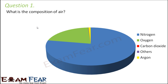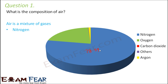Question number one: what is the composition of air? Air is made up of several gases — it's a mixture of gases. Nitrogen is the maximum, making up almost 78.09% of the air. Oxygen makes 20.95% of the air.